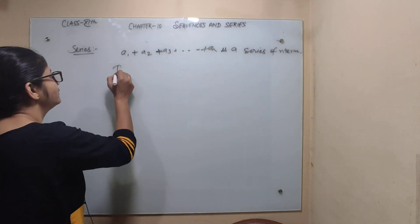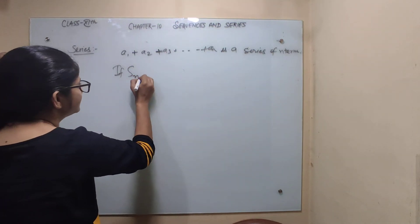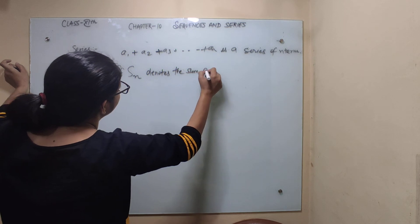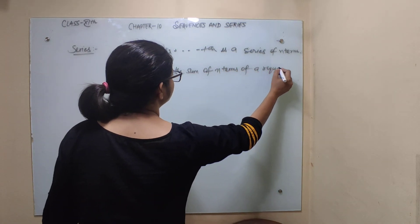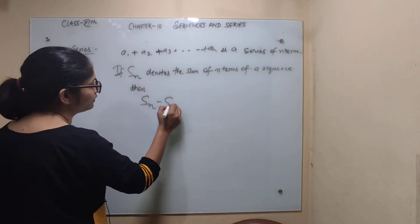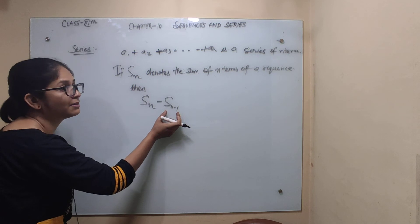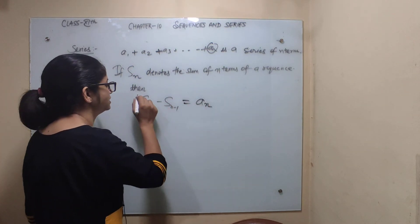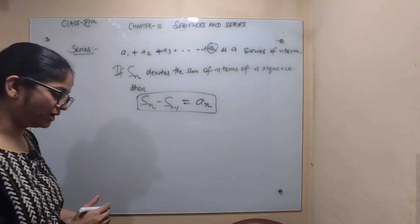If S_n denotes the sum of n terms of a sequence or series, then there is an important formula we will use in exercises: a_n equals S_n minus S_{n-1}. That is, the sum of all n terms minus the sum of n minus 1 terms gives the nth term.